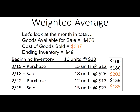Here's the summary slide: goods available for sale is $436 — exactly the same as the other two methods. Cost of goods sold is $387 and ending inventory is $49. Now, a couple of other topics before we wrap up chapter six.